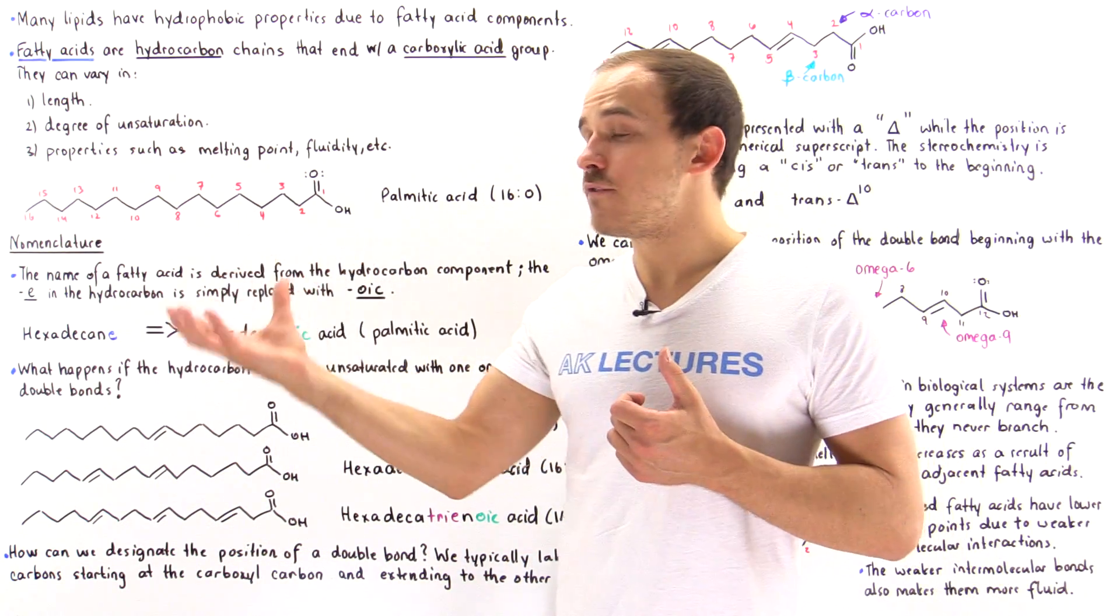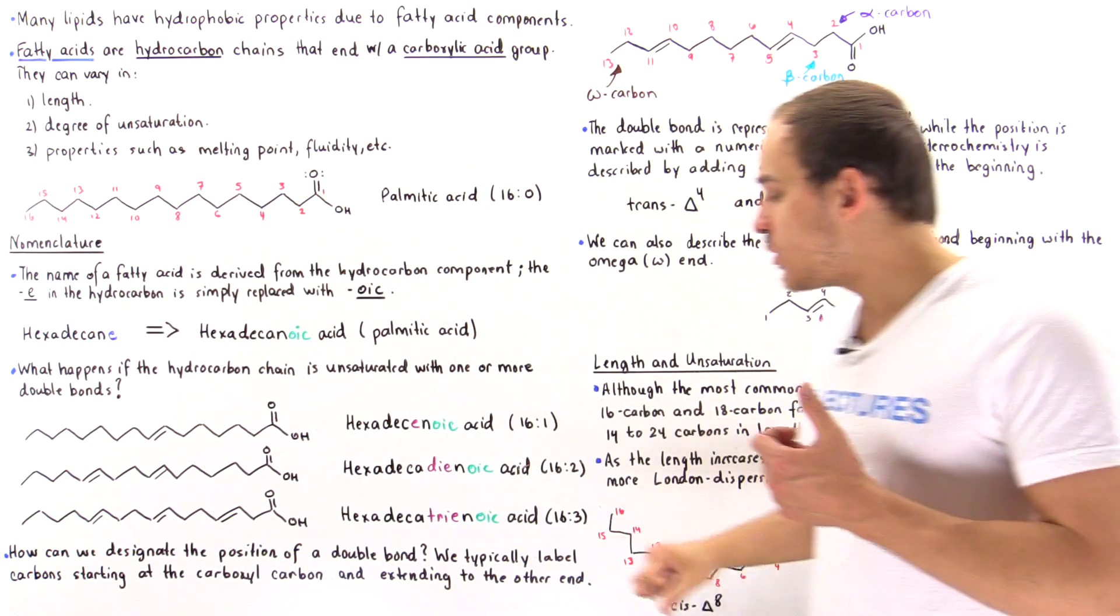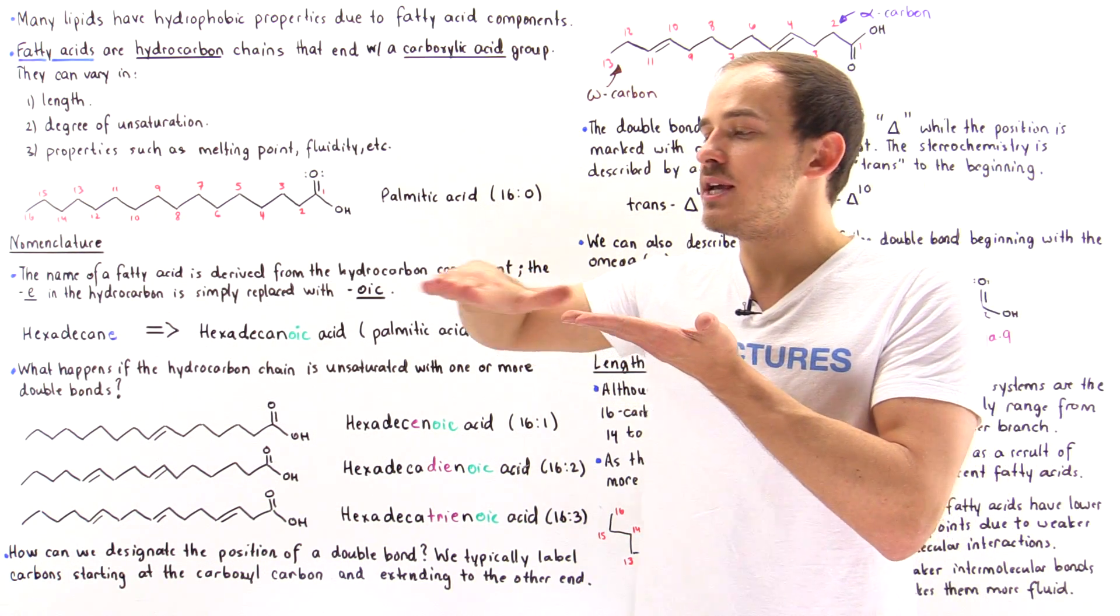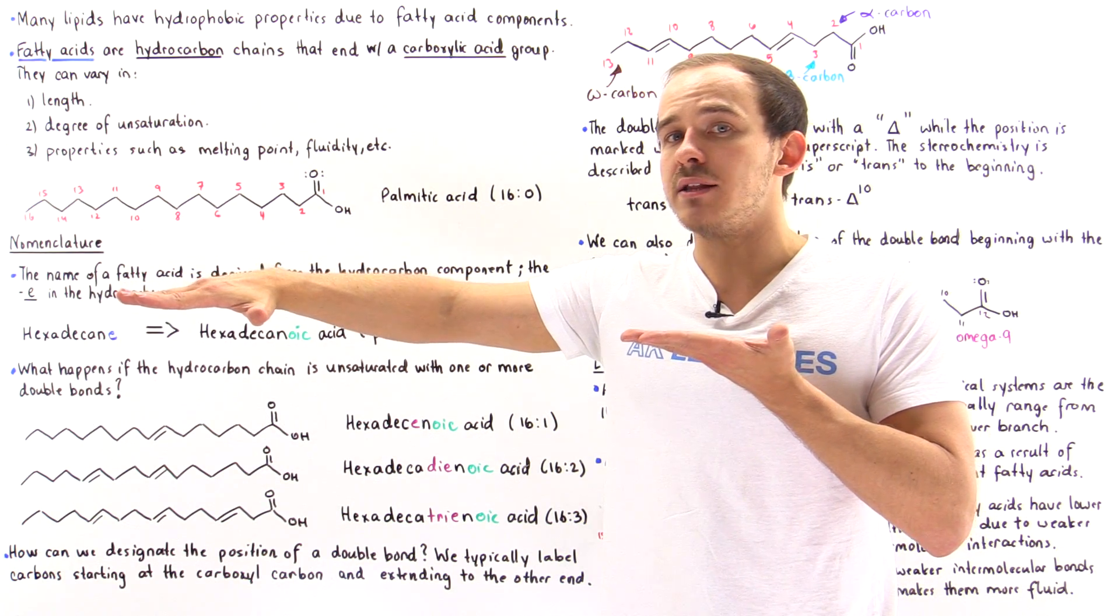Well, in the case of no double bonds, so this molecule minus this double bond, the molecule will essentially be a linear straight chain molecule.